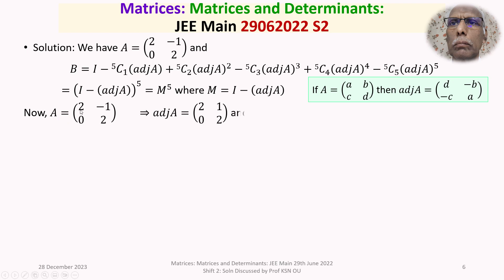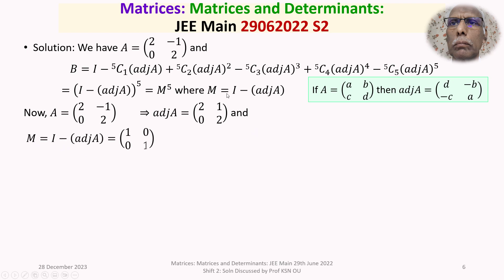Since A equals [2, -1; 0, 2], the adjoint of A is found by flipping the diagonal entries to get [2, 2] and changing the signs of the anti-diagonal elements: minus 1 becomes plus 1 and 0 remains 0, giving adjoint of A as [2, 1; 0, 2]. Therefore M equals I minus adjoint of A, which is the 2 by 2 identity matrix minus [2, 1; 0, 2], giving M equals [-1, -1; 0, -1].